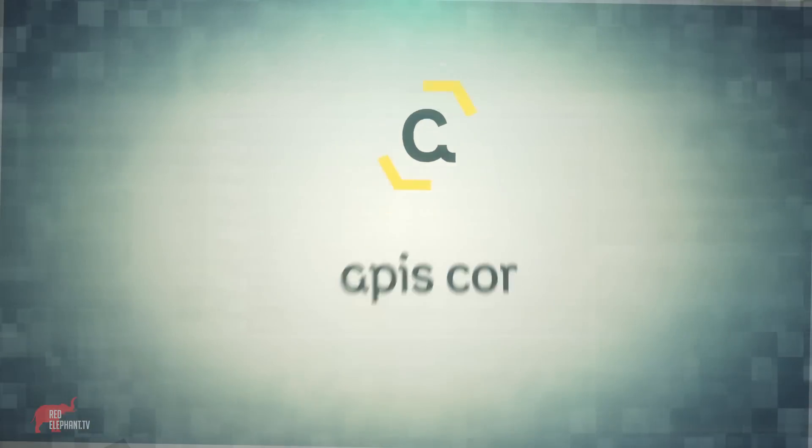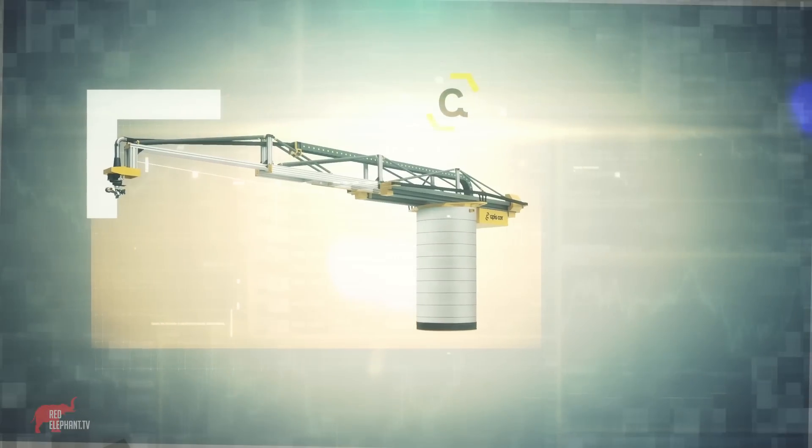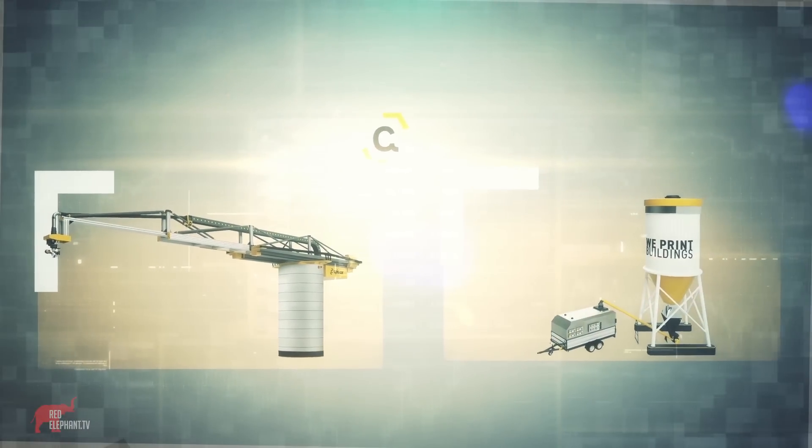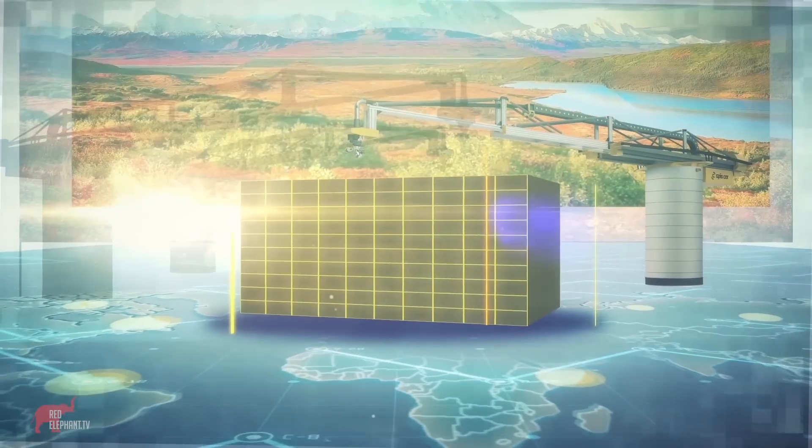APIS Core Technology is a mobile printer and an automated construction mixed supply system that can print walls for any building, anywhere.